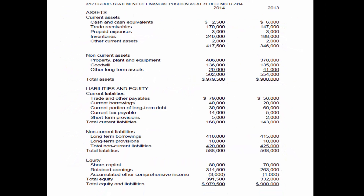Assets are things that a company owns. A smart company will purchase the right types of assets to hold and own in order to make as much money as possible. The purchasing of assets, especially non-current assets, is called investing activities. Investing in assets allows the company to hopefully make more money in the future.